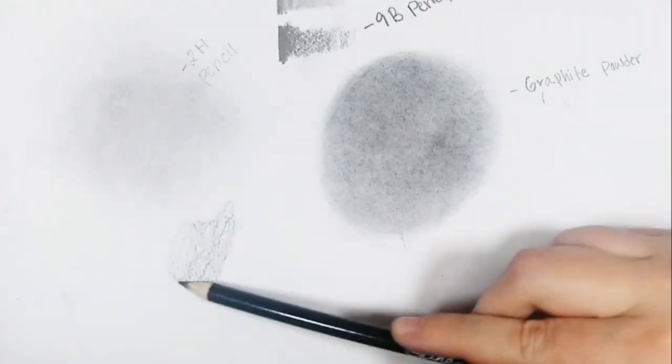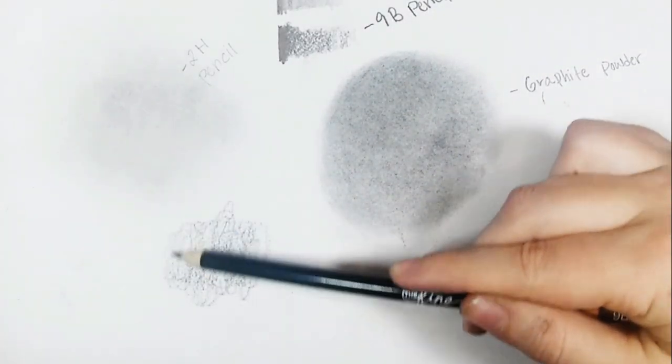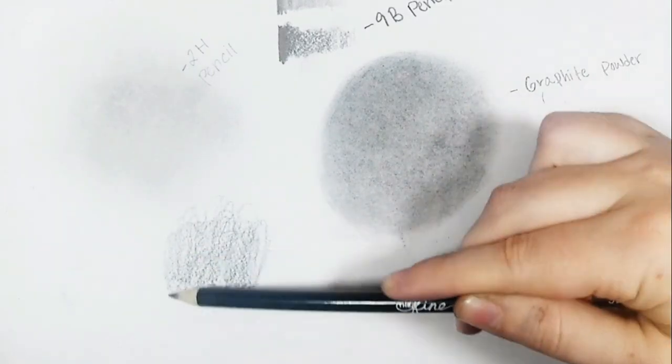Let's try it with the 9B pencil. When you shade in a back and forth motion, you will see set and start and stop points in your shaded area.